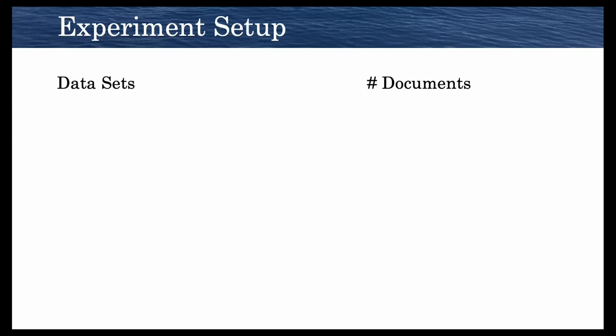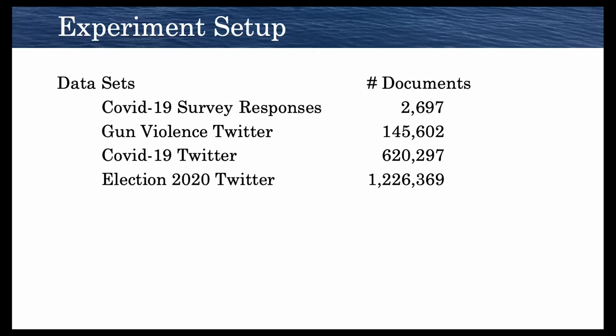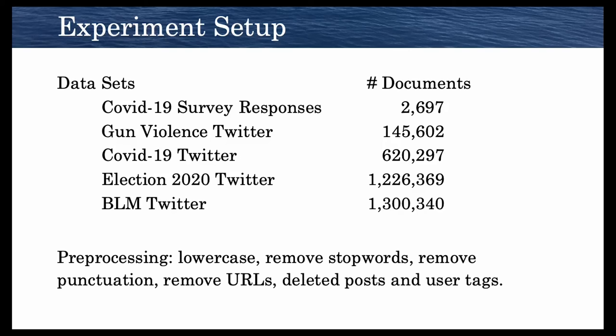Now in our experiments on real data, we used a few different datasets. We used open-ended survey responses about COVID-19, tweets about gun violence, tweets about the COVID-19 pandemic, tweets about the election 2020, and also tweets about Black Lives Matter. As you can see, the dataset sizes are different here, ranging from 2,000 to 1.3 million. For preprocessing, we lowercased, removed stop words, removed punctuation, URLs, deleted posts and user tags.